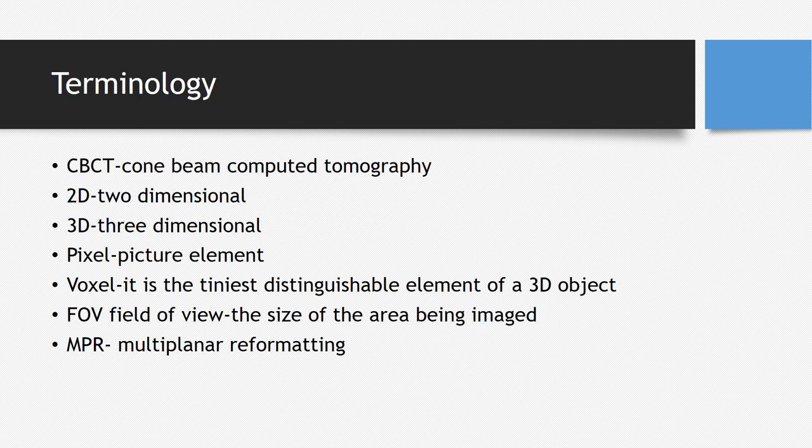Before we start the lecture, here is some key terminology: CBCT itself, two-dimensional, three-dimensional, pixel which is a picture element, voxel which is the tiniest distinguishable element of a 3D object, FOV which stands for field of view — the size of the area being imaged — and MPR, that is multi-planar reformatting.